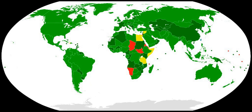VI. Provision of assistance and coordination with relevant organizations upon request by any state party in the case of alleged use of biological or toxin weapons, including improving national capabilities for disease surveillance, detection and diagnosis and public health systems. Topics I and II were dealt with in 2007, III and IV in 2008, V in 2009, and VI in 2010. For the second intersessional process, the meetings of experts for each year was reduced to one week.